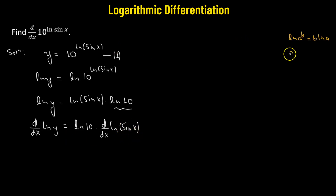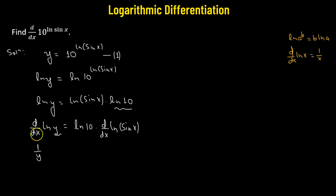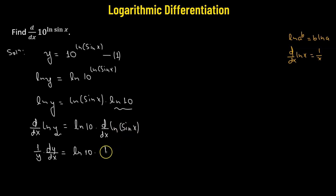We know that the derivative of the logarithmic function — d/dx of log x — is given by 1 over x. In our case, the derivative of log y gives 1 over y, but since we have y, we use the chain rule and multiply by dy/dx. On the right side, the derivative of log of sine x gives 1 over sine x, and since we have sine x instead of x, we multiply by the derivative of sine x.